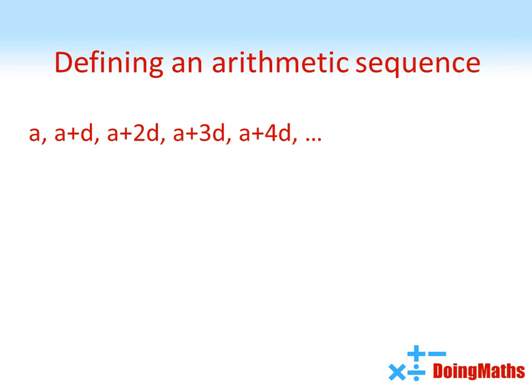If you look at this sequence, you can see the number of d's is always one less than its place in the sequence, so the nth term would always be a plus n minus 1 lots of d.